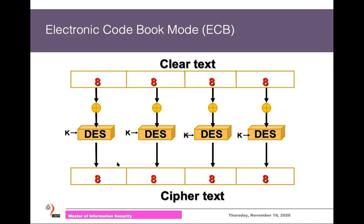When using symmetric encryption, we have security operational modes. We discussed several modes — the Electronic Code Book (ECB), Cipher Block Chaining (CBC), and so on. In ECB, we divide the data into different blocks and feed those blocks to the encryption algorithm. For DES, the block size is 8 bytes; for AES, the block size is 16 bytes. In the last block, we usually add padding.